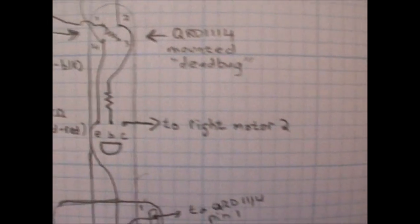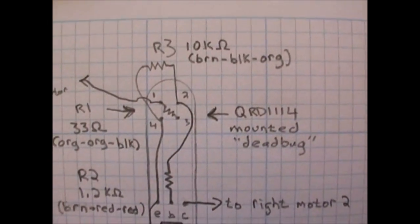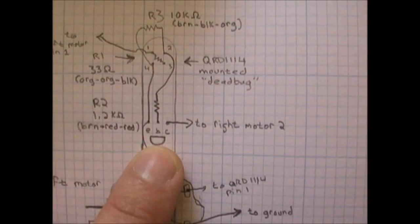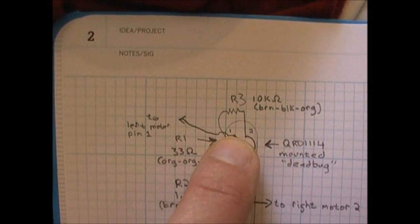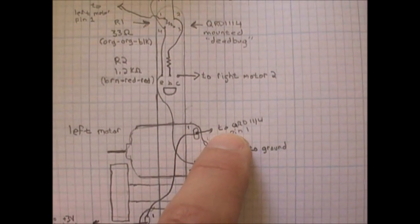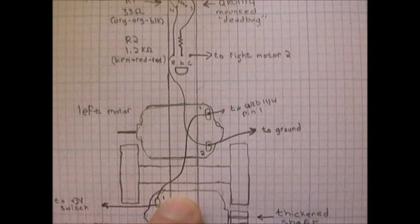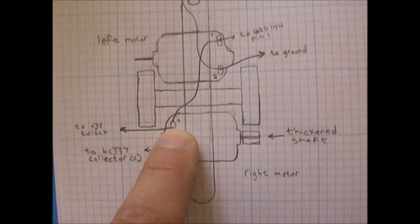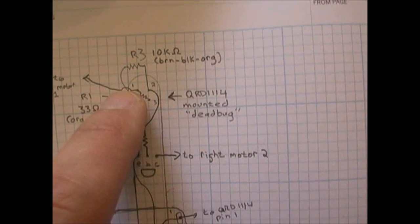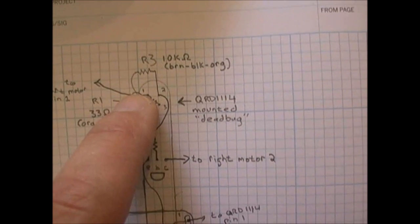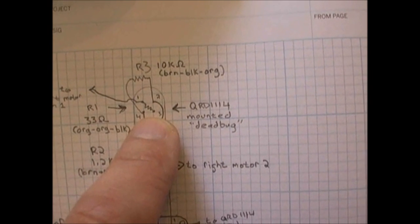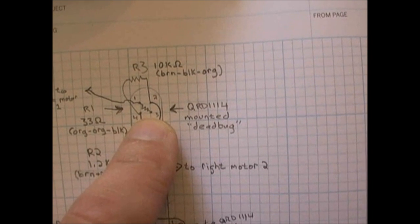You can see there's the QRD mounted dead bug underneath the popsicle stick. There's the NPN transistor. Pin one of the QRD gets connected to the left pin motor. There's the left motor, pin one, which runs back to pin one of the right-hand motor, and that goes to three volt power. Basically, a small resistor goes from pin one to three. Pin three is the diode, the IR diode, that is the transmitter part, the emitter part of the sensor.